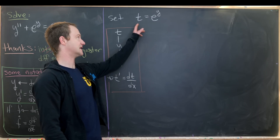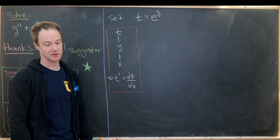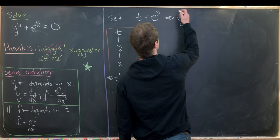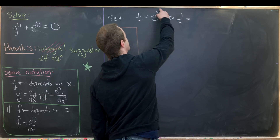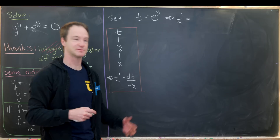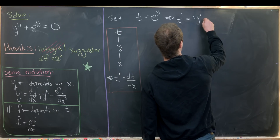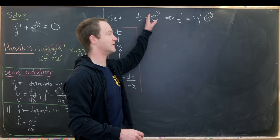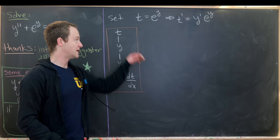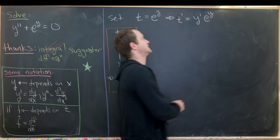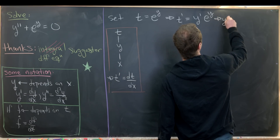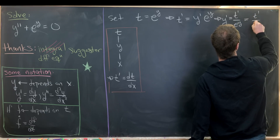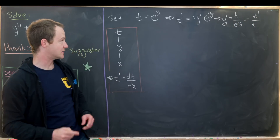Since t depends on x via this exponential function, let's take the derivative of t with respect to x using the chain rule. We have t prime equal to the derivative of e to the y with respect to x, which by the chain rule gives us y prime times e to the y. We can then solve for y prime in terms of t: y prime equals t prime over e to the y, which equals t prime over t.